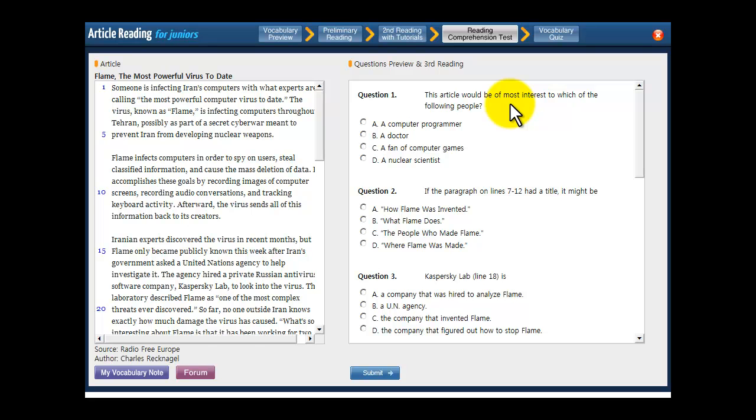Look at your choices. You have A, a computer programmer, which sounds like it's probably the right answer, right? Because a computer programmer would be interested in an article about a computer program. Let's go ahead and click it. We can always change it if something better comes along.